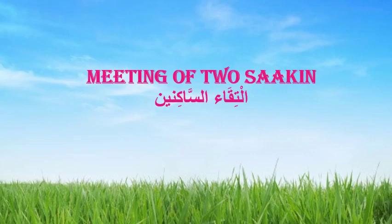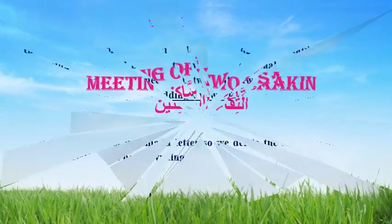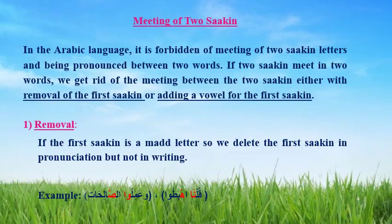The topic is the Meeting of Two Sakins (Iltiqaa al-Sakinayn). In the Arabic language, it is forbidden for two successive sakin letters to meet between two words. So if two sakins meet across two words, we get rid of this meeting either by removal of the first sakin or by adding a vowel to the first sakin.